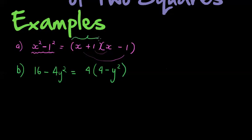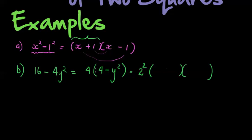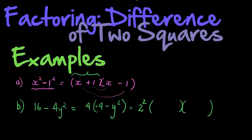This factor, 4 minus y squared, can still be factorized further. The 4 in front we can write as 2 squared. Then 4 minus y squared gives us two brackets, because we see two terms with different signs — the difference of two squares. The 4 can be written as 2 squared, so we get 2 plus y in one bracket and 2 minus y in the other, giving y times y equals y squared.